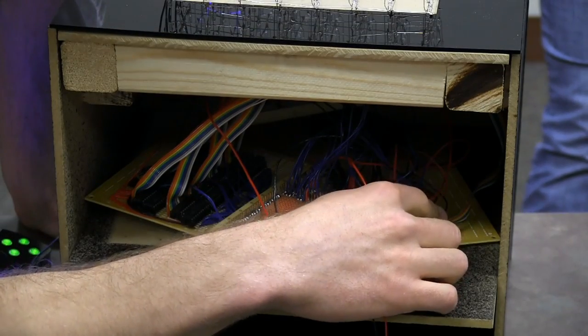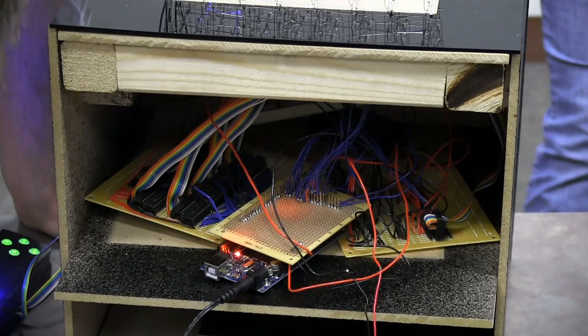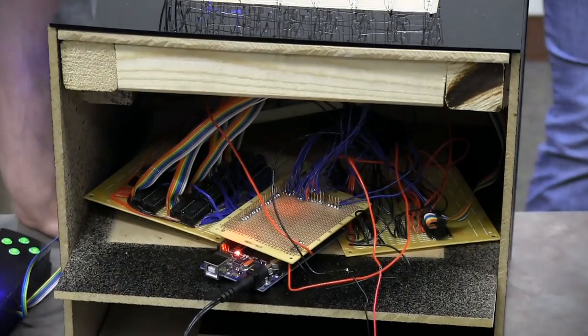This is our controller set up here, and then back here we have the transistor for the rumble pack, and then also our pick for our buzzer. This is all run off of an Arduino Mega.